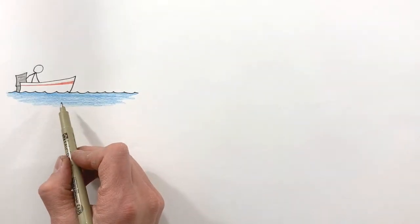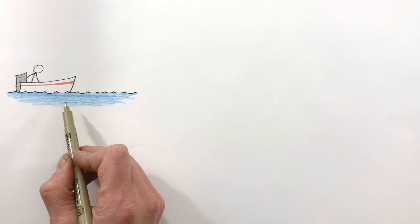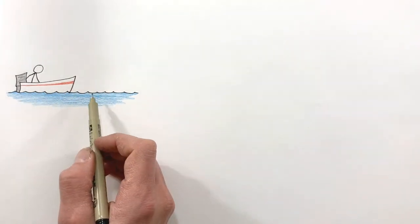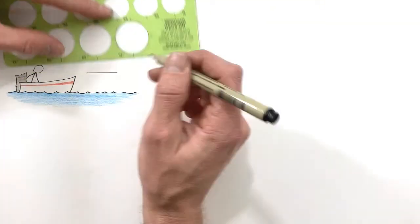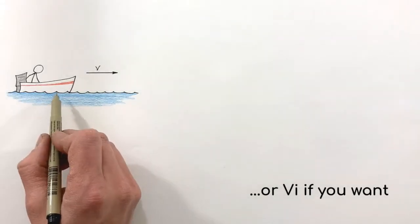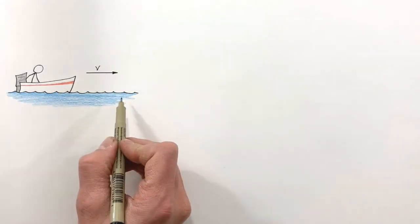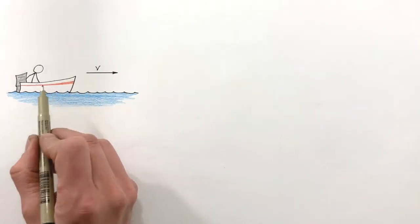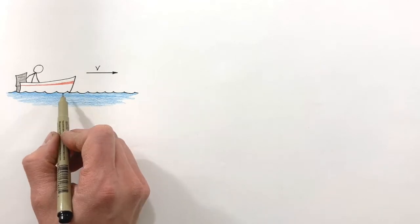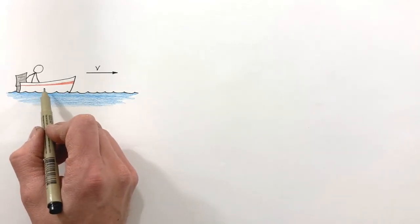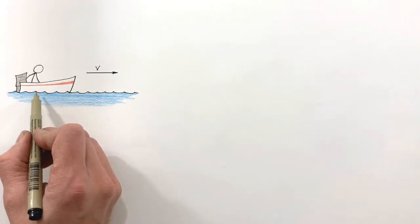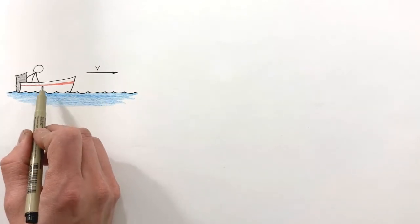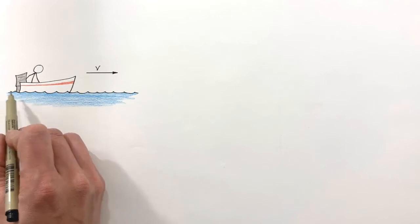Today we're going to take a look at resistive forces by examining a boat moving through the water at some initial velocity v. As the boat travels through the water, it has to push the water out of the way. Because of Newton's third law, the water pushes back on the boat, creating a resistive force that acts backward on the boat.